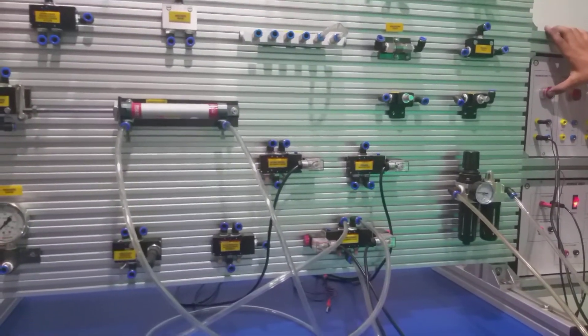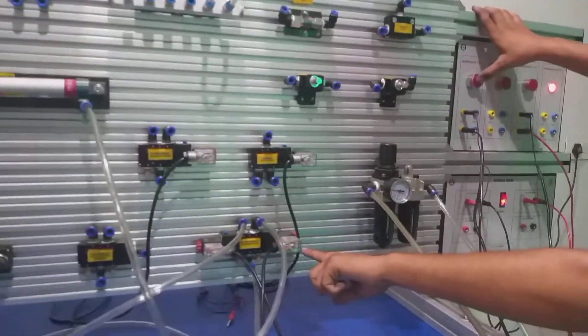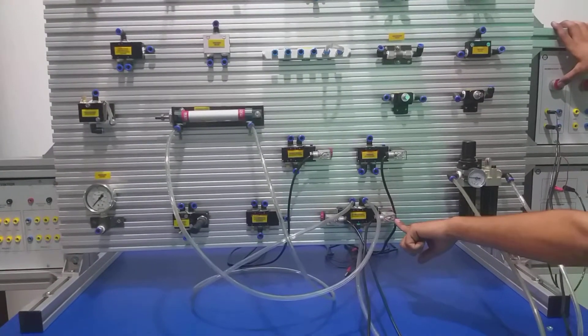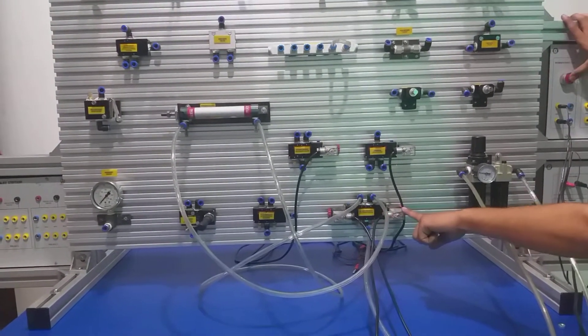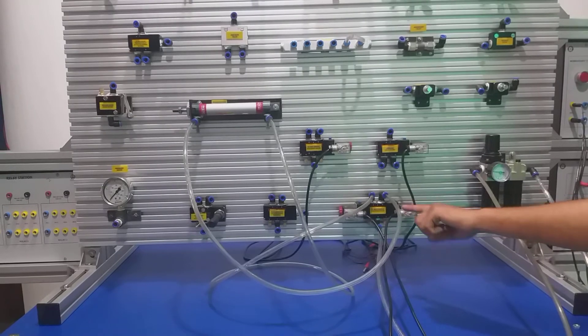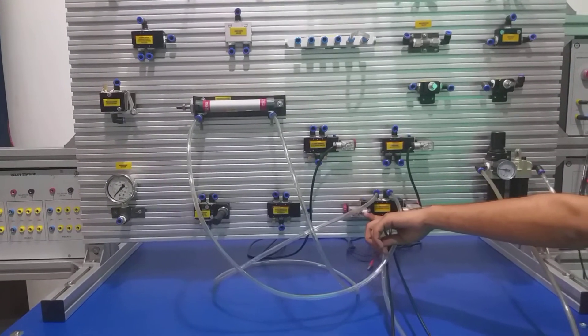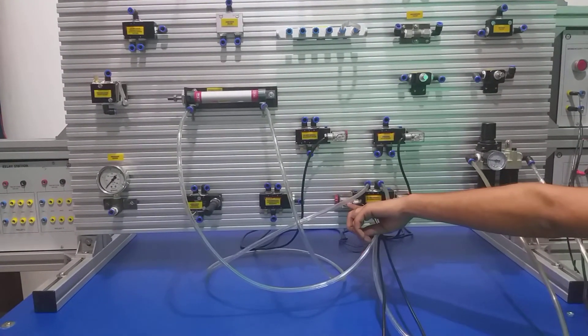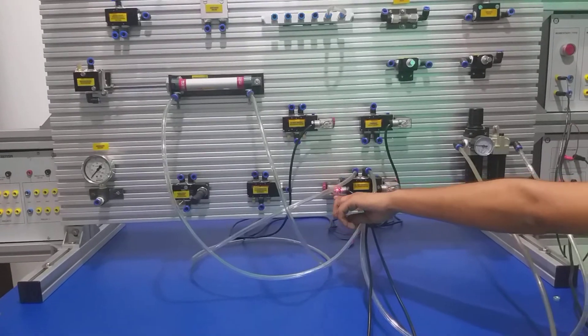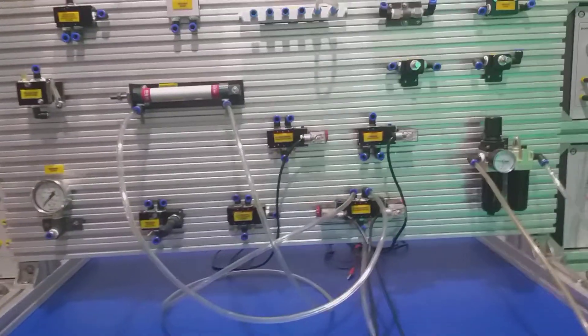Here you can see that when we press the first push-button, the light illuminates on the first solenoid valve. And when we press the second manual button, the light illuminates on the second solenoid valve. Thank you.